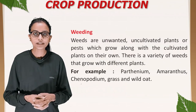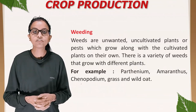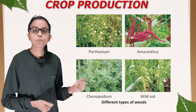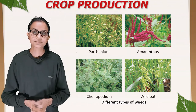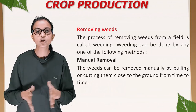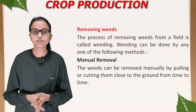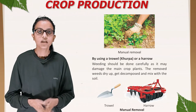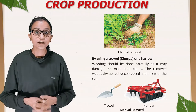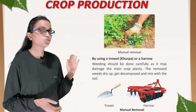Weeding: weeds are unwanted, uncultivated plants that grow along with cultivated plants on their own. There is a variety of weeds — for example, Parthenium, Amaranthus, Chenopodium, and Wild Oat. The process of removing weeds from a field is called weeding. Methods include manual removal — pulling or cutting weeds close to the ground from time to time. Weeding should be done carefully so as not to damage the main crop. The removed weeds dry up, decompose, and mix with the soil. Tools used include trowels and harrows.